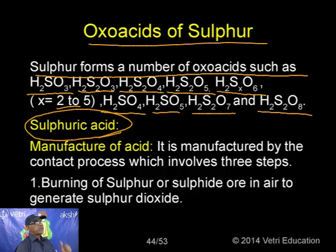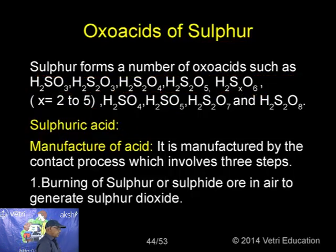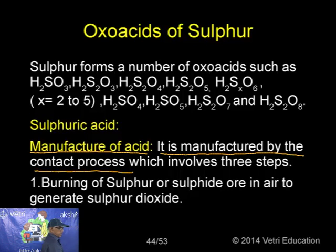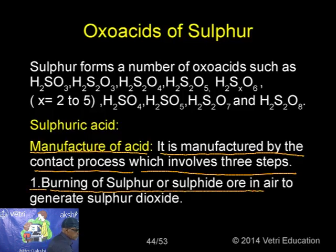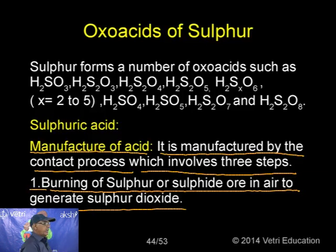Action of SO₂ with sodium hydroxide: it reacts readily with NaOH to form sodium sulphite initially. In excess SO₂, sodium sulphite is further converted to sodium bisulphite. The reactions are: SO₂ + 2NaOH → Na₂SO₃ + H₂O, and Na₂SO₃ + SO₂ + H₂O → 2NaHSO₃.